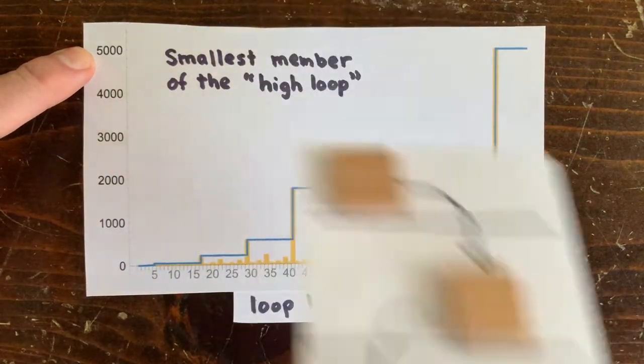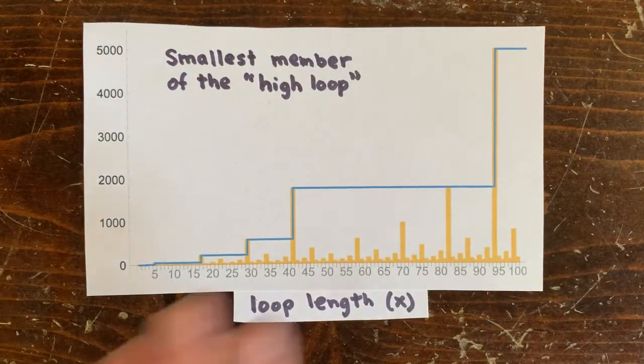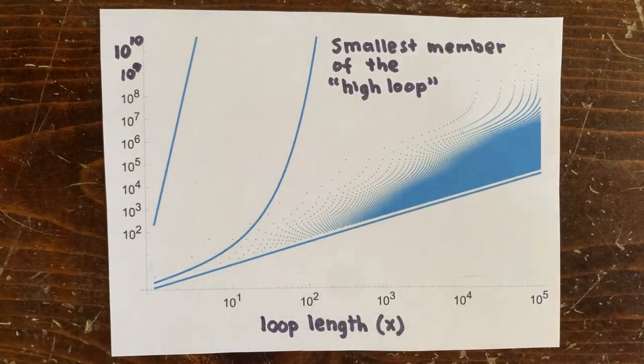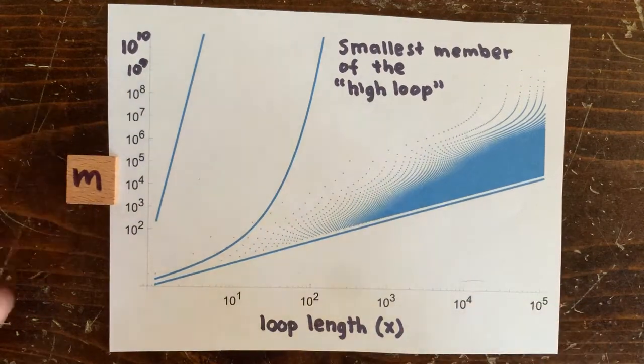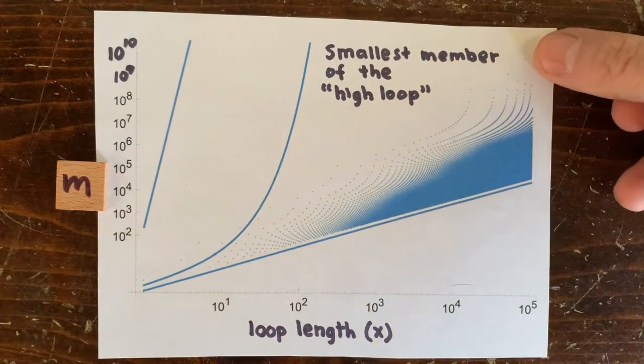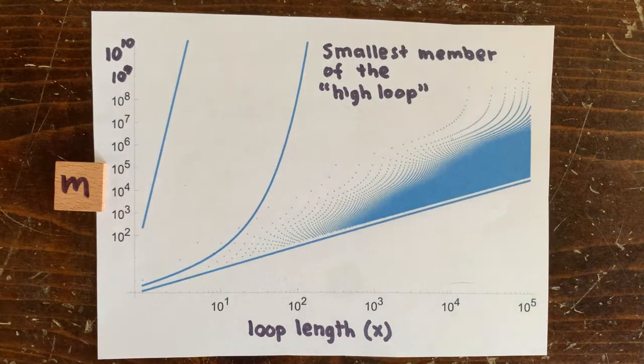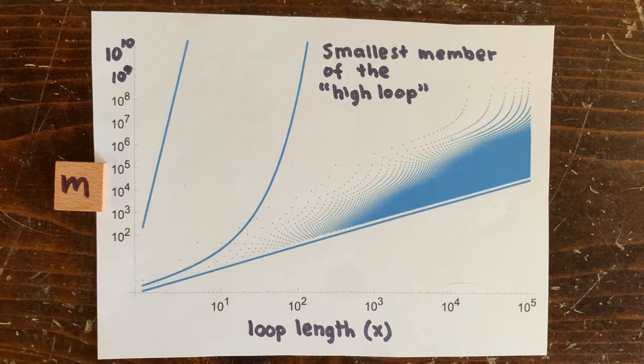Should we keep going past 100? Sure. So here's x up to 100,000. So by now we found a high loop with members where all the members are greater than 10 to the 10th, but somebody is 10 to the 10th. So it's a long loop with huge members, but it can't be an integer loop.